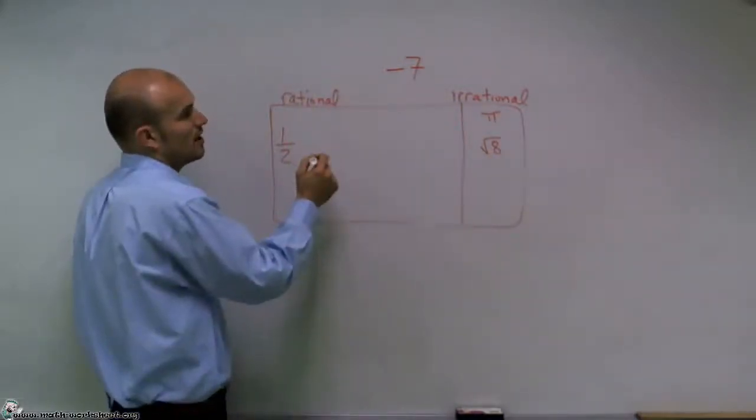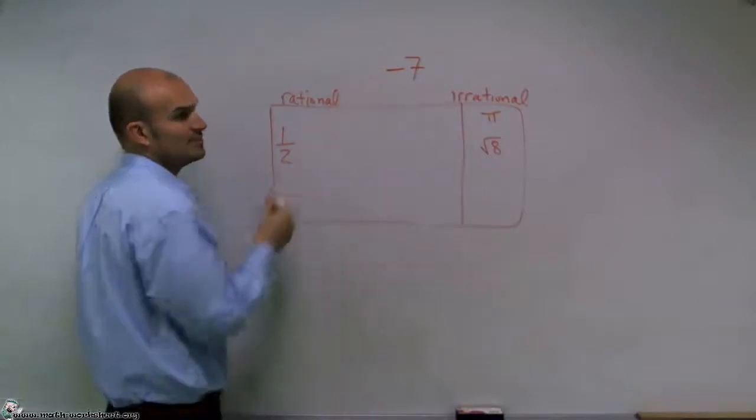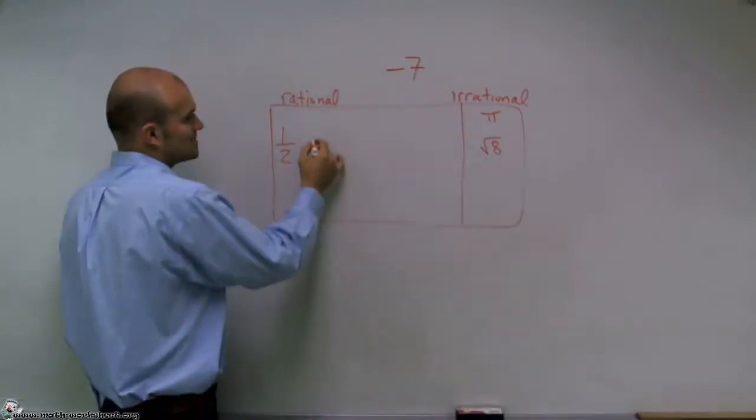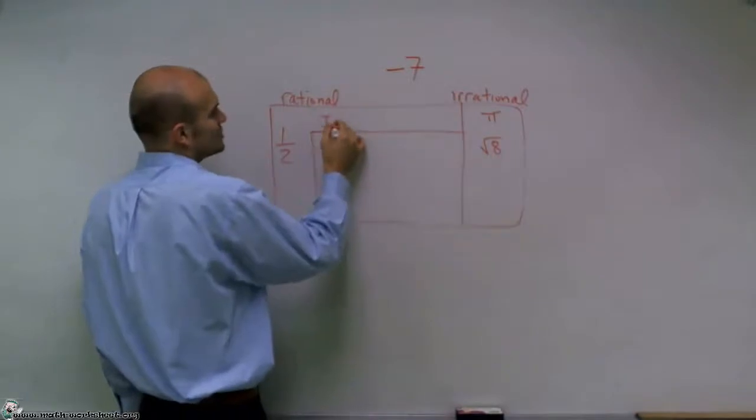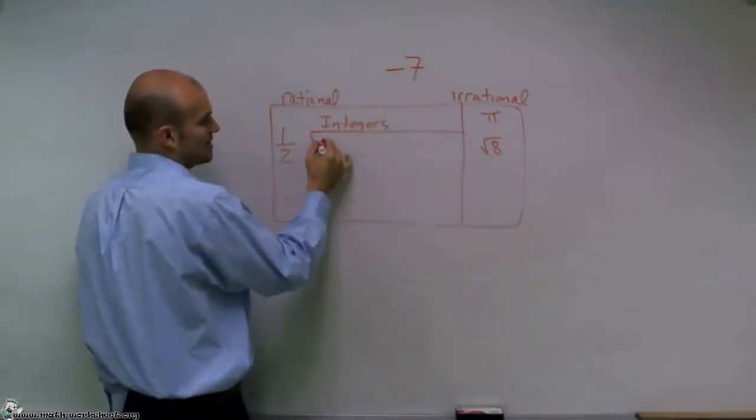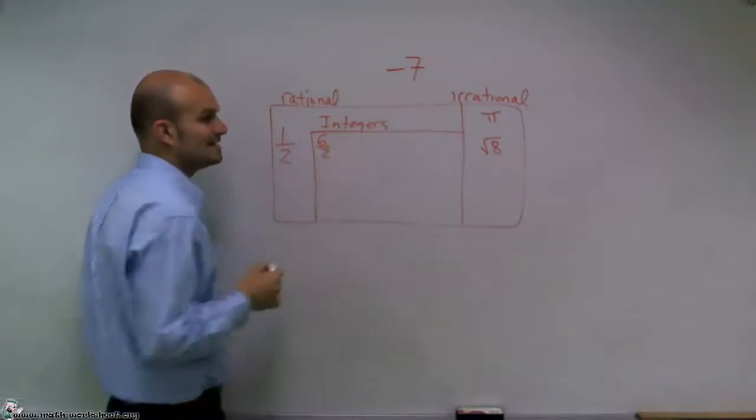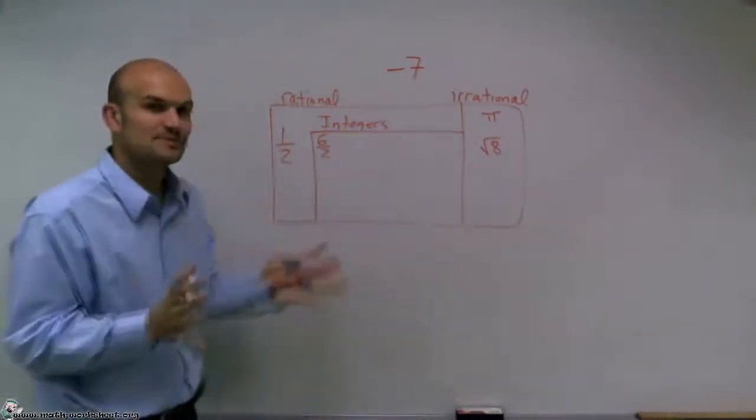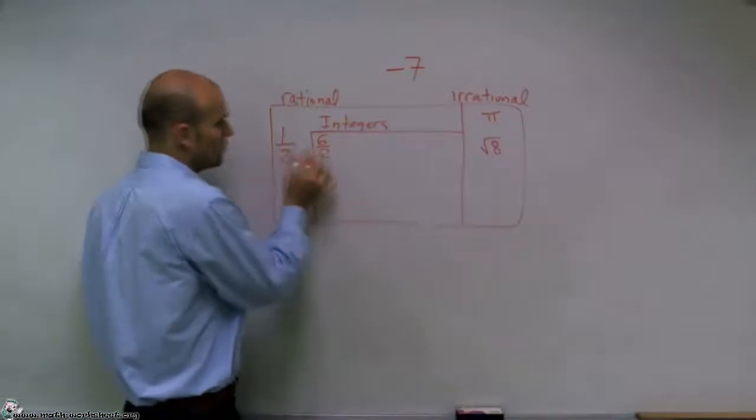So we look at this and we say, all right, where is this going to be? Well, it's obviously going to be on the rational side. The next one we want to look at are integers. Now, integers are obviously rational numbers, so I could say 6 divided by 2 is an integer. But the difference between integers and rational numbers is one thing.